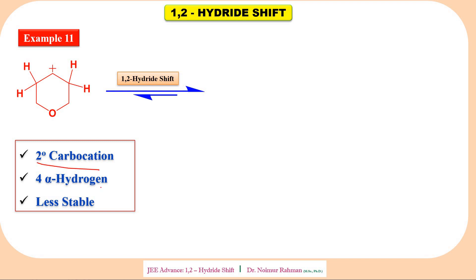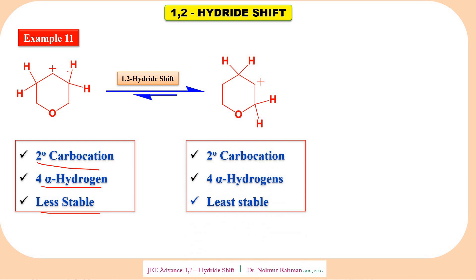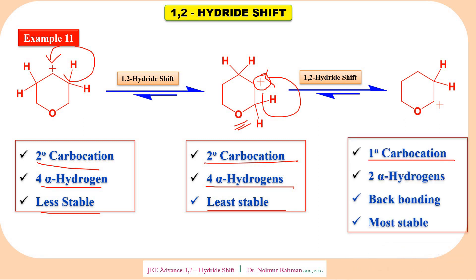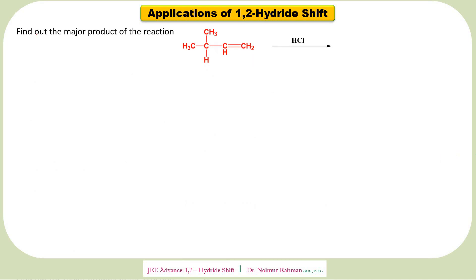Example eleven: this is a secondary carbocation with four alpha hydrogens — it is less stable. A simple hydride shift gives another secondary carbocation with four alpha hydrogens, which is least stable because the positive charge is near a more electronegative atom and there is no back bonding. Shifting another hydride gives a primary carbocation with two alpha hydrogens, but because of back bonding, stability increases dramatically.